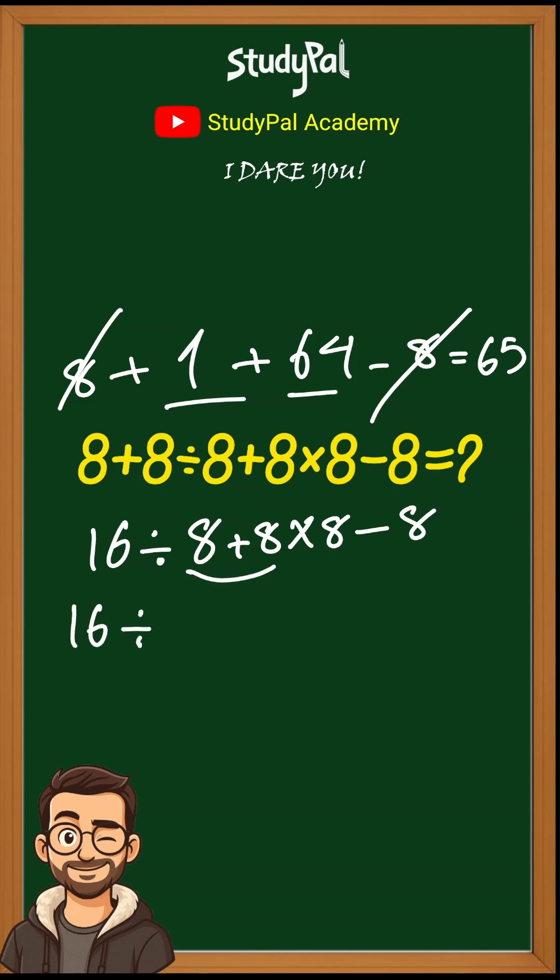16 divided by 16 times 8 minus 8. Again, 16 divided by 16 is 1. 1 times 8 minus 8.